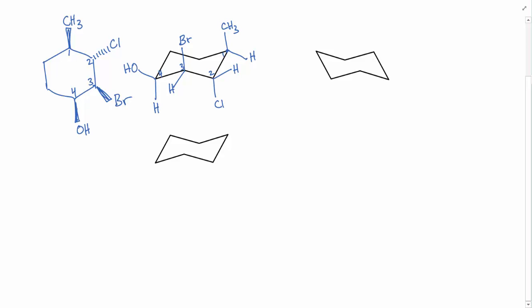Now, if I want to draw the chair flip of this, you can think of this number 1 as flipping down and it becomes this carbon here, and the number 4 here flipping up towards the top, and it becomes this carbon here.